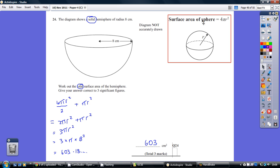We're given the formula in the booklet that the surface area of a total sphere, you know, the whole football, is 4 pi r squared. Well, this is half of that, so that's 2 pi r squared.